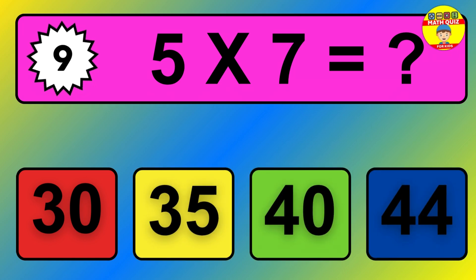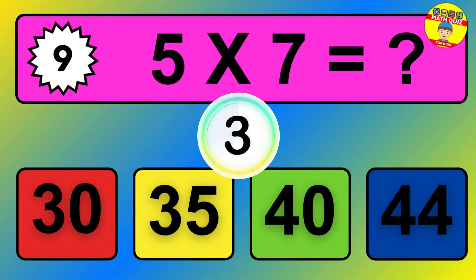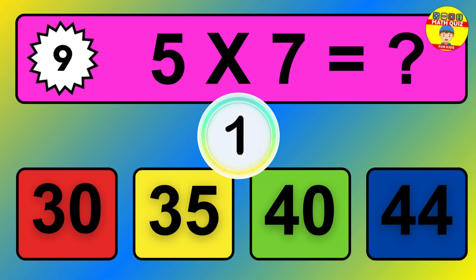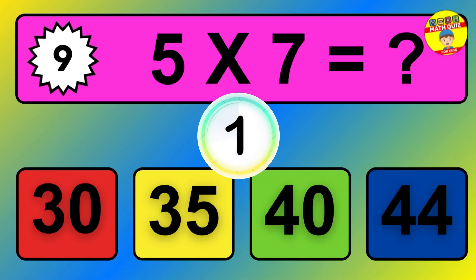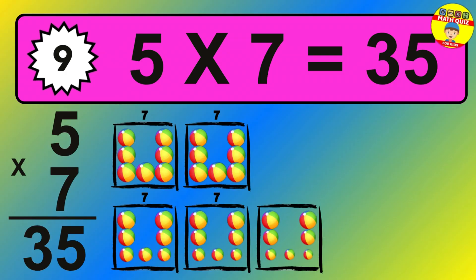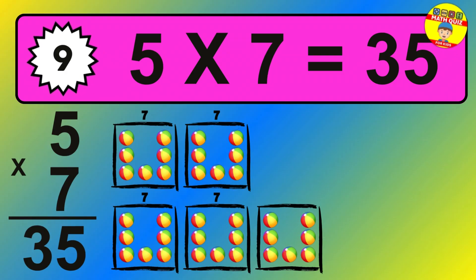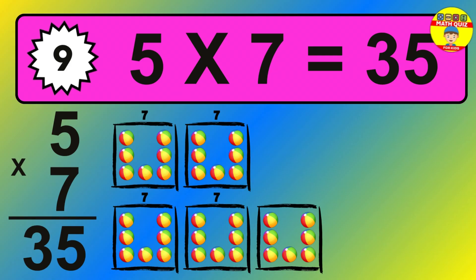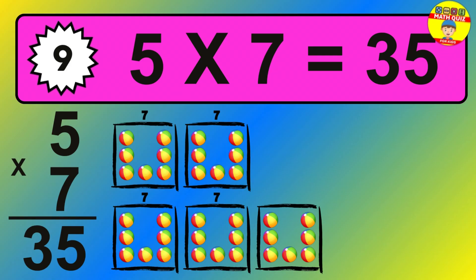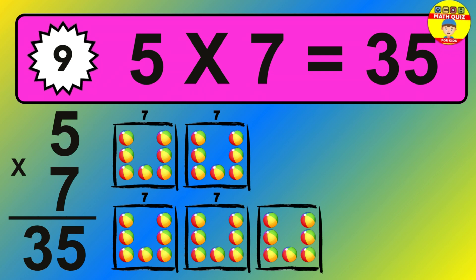Question 9. 5 times 7 equals what? The answer is 5 times 7 is 35. To calculate, we have 5 groups with 7 balls each one. So how many balls do we have? 35 balls.